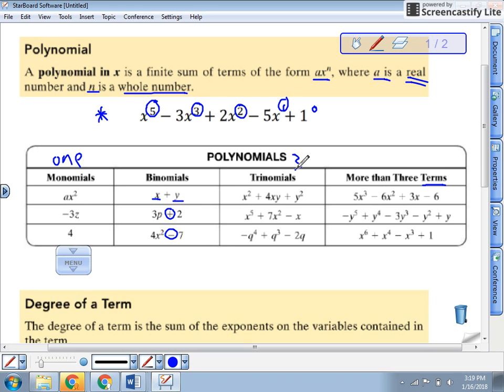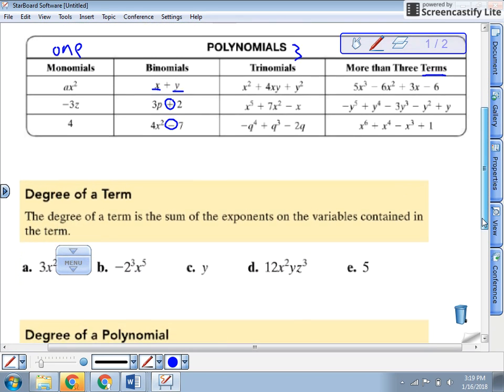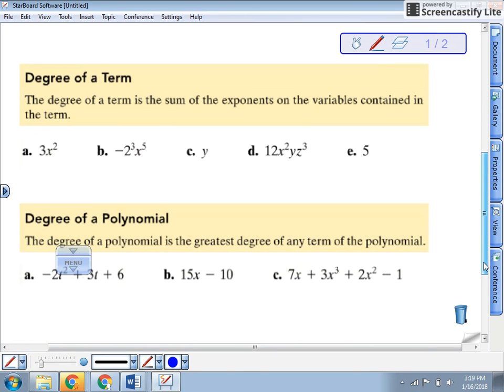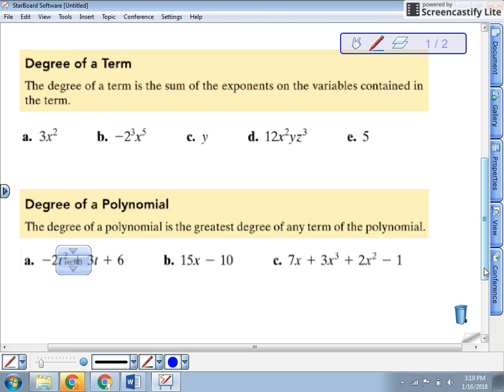Now, now that we know what the polynomials are, we need to find the degree of a term and the degree of a polynomial. They're very closely related, but they are a little bit different. The degree of a term is the sum of the exponents on the variables contained in the term.